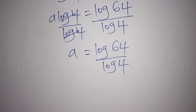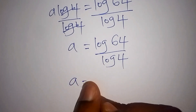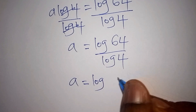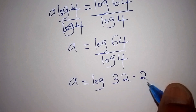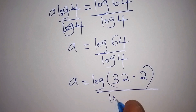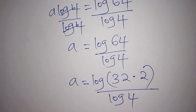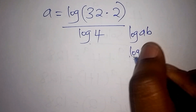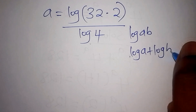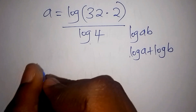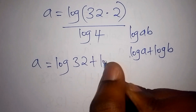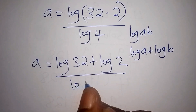We can simplify by writing log of 64 as log of 32 times 2. Using the log product rule — log of a times b equals log a plus log b — we rewrite this as log of 32 plus log of 2, all over log of 4.